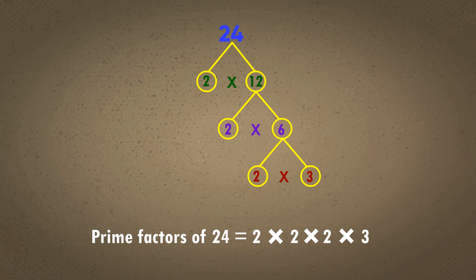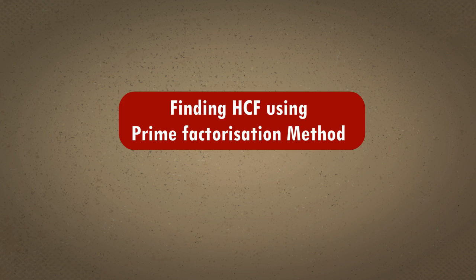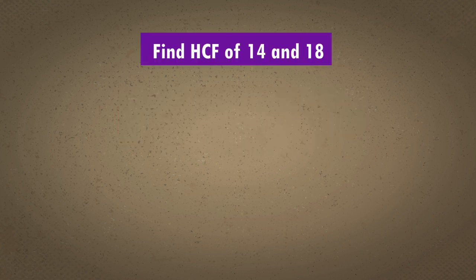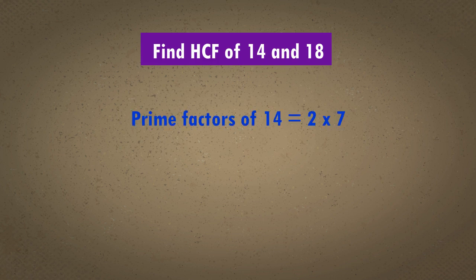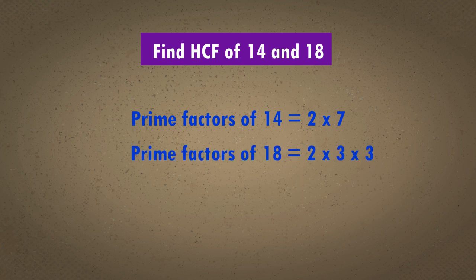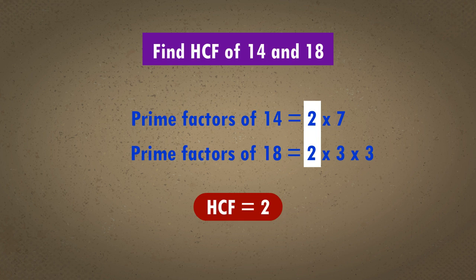We shall use this method to find the HCF of given numbers. Finding HCF using prime factorization method: let us find the highest common factor of 14 and 18. The prime factors of 14 are 2 and 7. We can clearly see that the prime number 2 is the only common factor. Therefore, the highest common factor of 14 and 18 is 2.